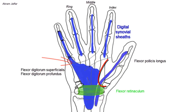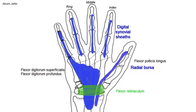The synovial sheath of flexor pollicis longus, sometimes called the radial bursa, communicates with the common sheath of the tendons of superficialis and profundus, which is called the ulnar bursa. This communication takes place in about 50% of cases and is usually present at the wrist.